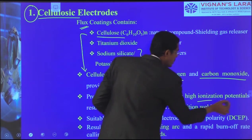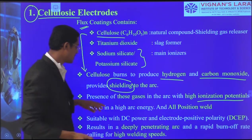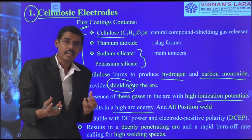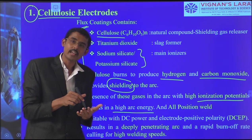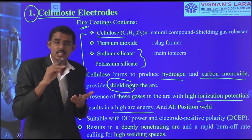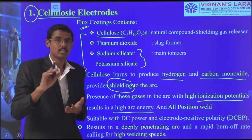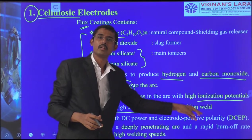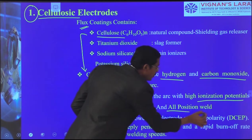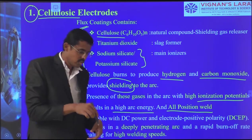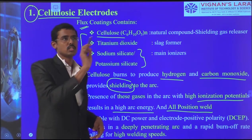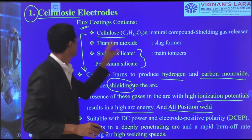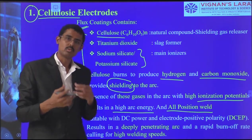Continuous welding can be done with no arc disturbance, and all-position welding can be performed — 1G, 2G, 3G, 4G, 6G — all positions can be done by cellulose electrodes.